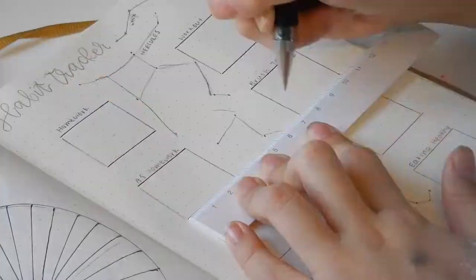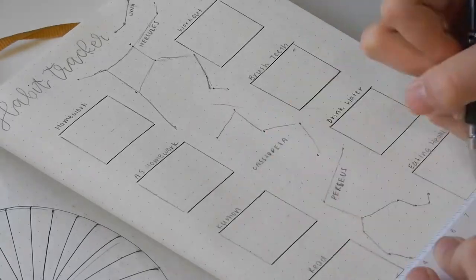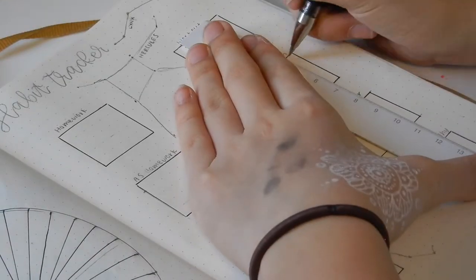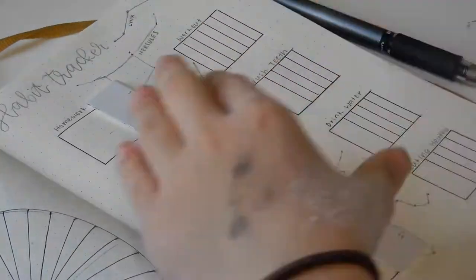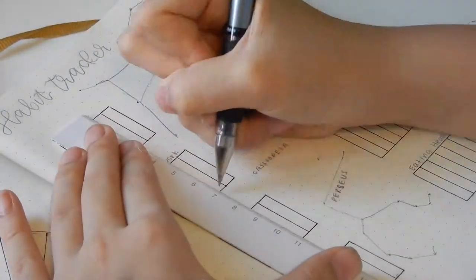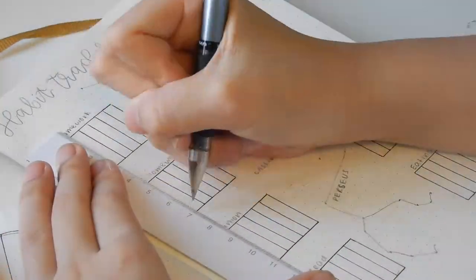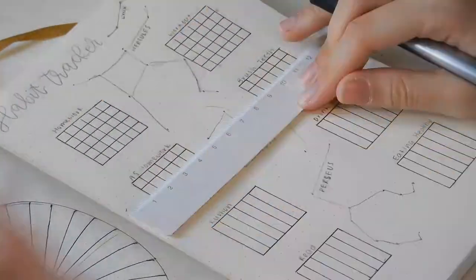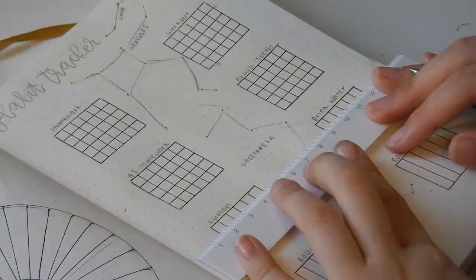For my habit tracker, I went with a different layout this time. So I went in with boxes instead of like a line. And I actually really like how this page turned out. I had to draw so many lines, and I had to just do a lot of things on this habit tracker.